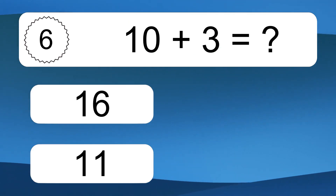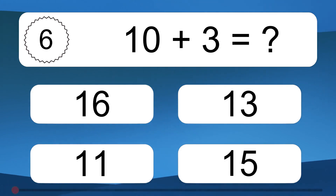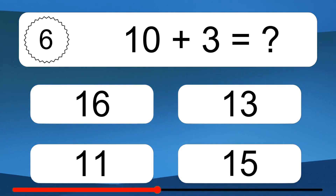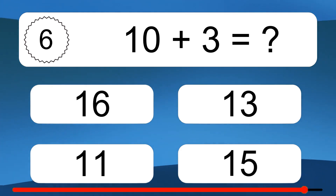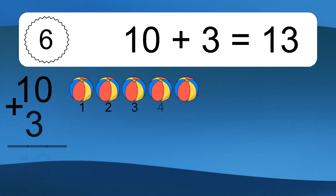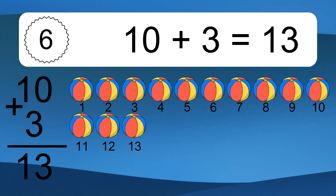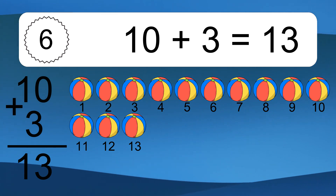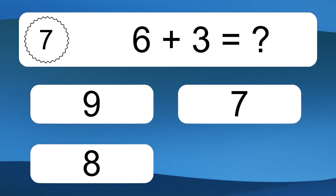10 plus 3 equals what? 10 plus 3 equals 13. Let's count it. 1, 2, 3, 4, 5, 6, 7, 8, 9, 10, 11, 12, 13.